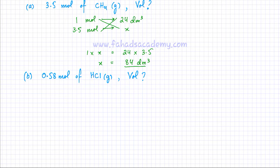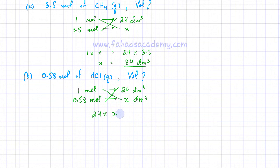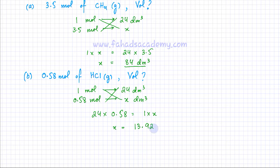Now another similar question: I have 0.58 moles of HCl gas and need to find the volume. Using ratios, one mole of HCl gas occupies 24 dm³. So 0.58 moles occupies x dm³. Cross multiplying: 24 × 0.58 = 1 × x, so x = 13.92 dm³. By using simple ratios I found that 0.58 moles of HCl occupies 13.92 dm³.